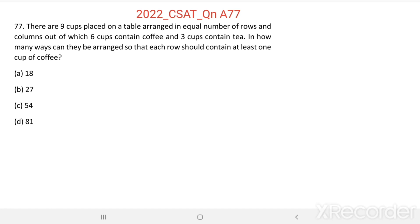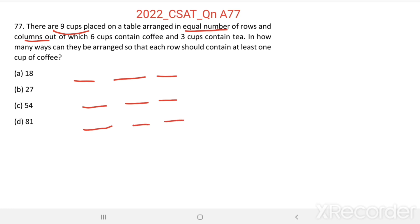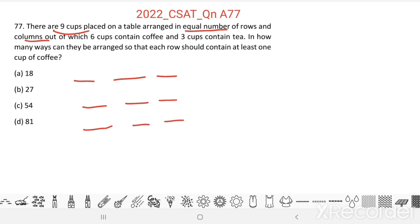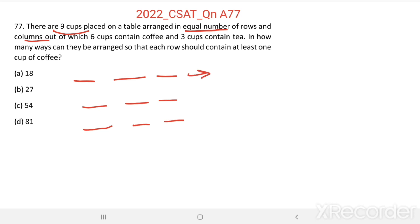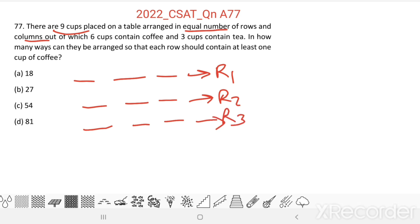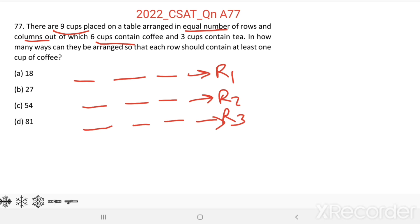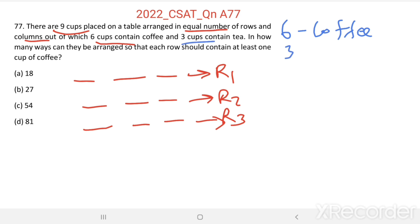There are 9 cups arranged in equal number of rows and columns. Equal number of rows and columns means each row contains 3 cups — R1, R2, and R3. Out of 9, 6 cups contain coffee and the remaining 3 contain tea.